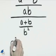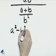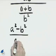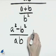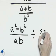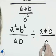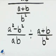That will be a squared minus b squared over ab divided by a plus b over b squared. And now we'll need to change division to multiplication and take the reciprocal of the second fraction.